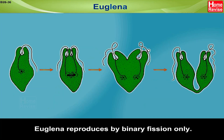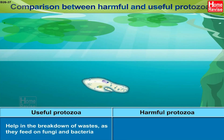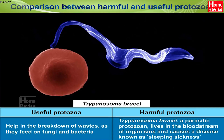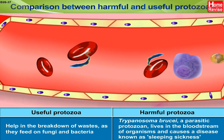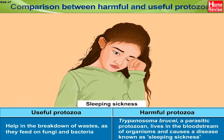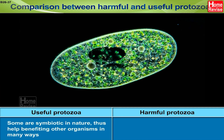Euglena reproduces by binary fission only. Useful protozoa help in the breakdown of wastes as they feed on fungi and bacteria. While Trypanosoma brucei, a parasitic protozoan, lives in the bloodstream of organisms and causes a disease known as sleeping sickness. Some protozoa are symbiotic in nature, thus benefiting other organisms in many ways.